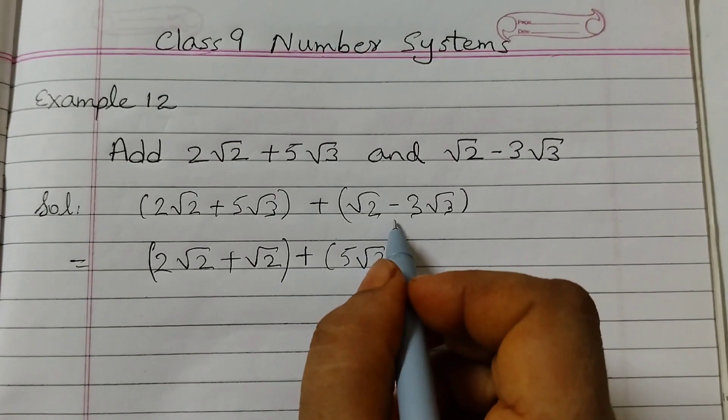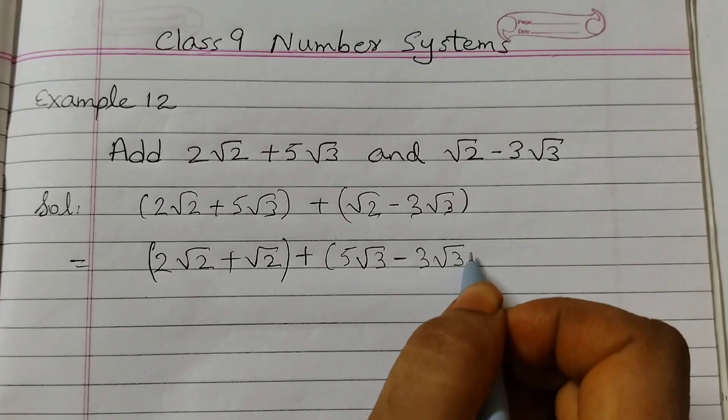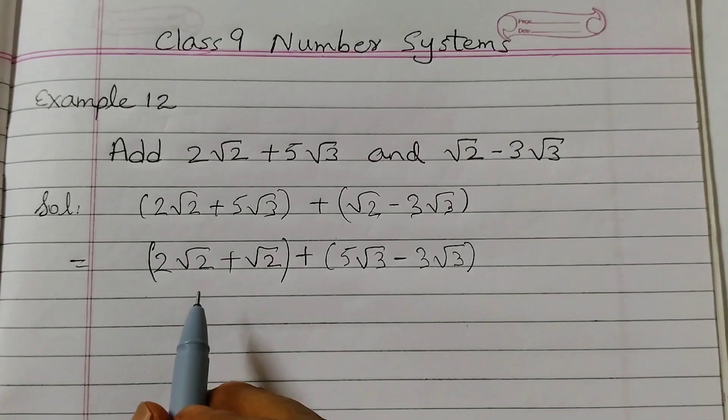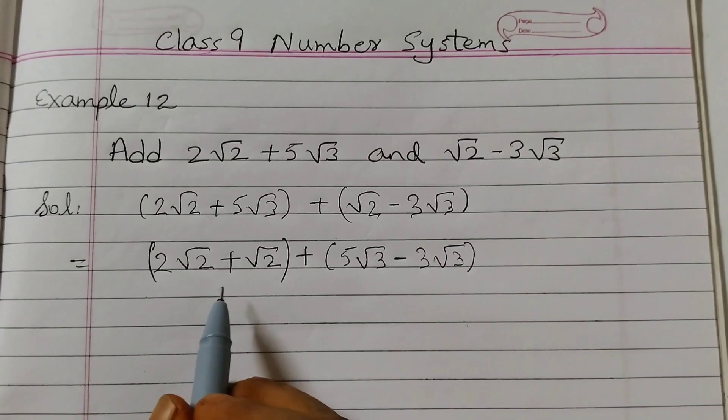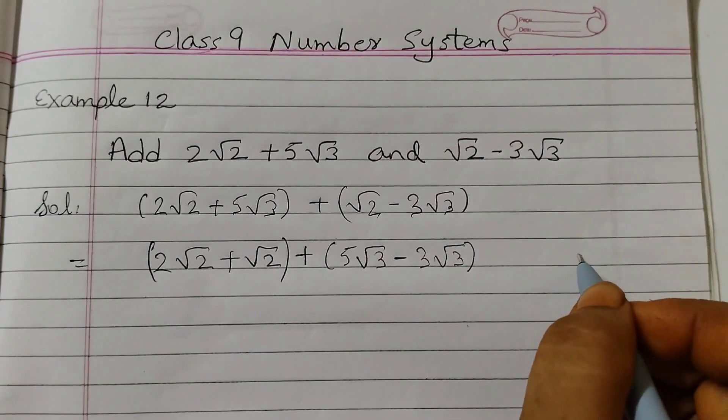You can just take these as variables. How we deal with variables, same way you have to do this. So now you can think of this as 2x + x. 2x + x is 3x.